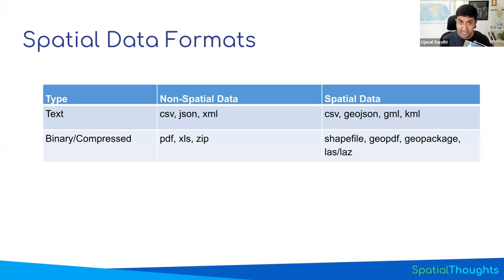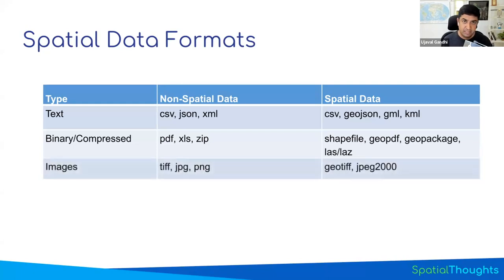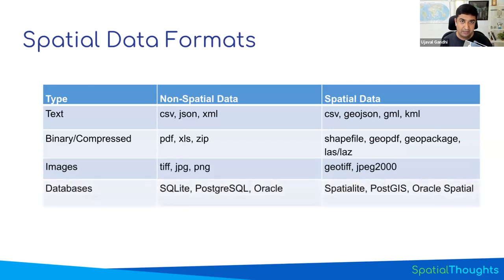You also have formats such as GeoPackage, which is the recommended format to use with QGIS, and can represent multiple layers together in a binary format. There are also formats such as LAS and LAZ, which are compressed formats for storing point cloud data. For images, the spatial equivalent of PNG or JPEG is GeoTIFF — a TIFF file with geospatial information. Similarly, a JPEG file with georeferenced data becomes a JPEG-2000 file. There are also databases widely used for storing geospatial data. Most popular databases now have a spatial extension — for example, PostGIS is an extension for PostgreSQL that supports all different types of spatial data including vector and raster.